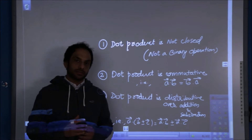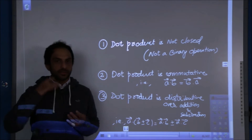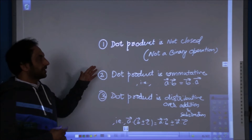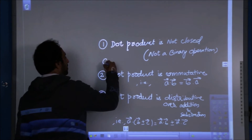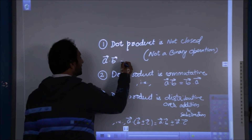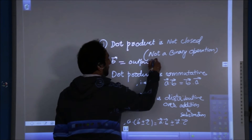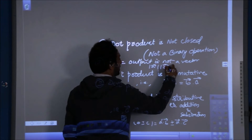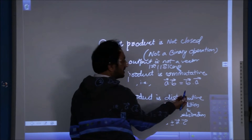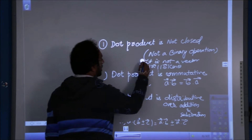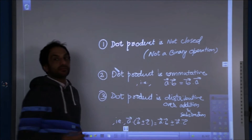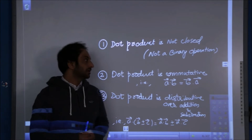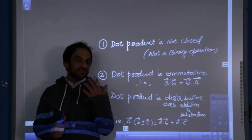Since A dot B = |A||B| cos theta, let's look at other characteristics of dot product. First, dot product is not closed — the output is not a vector. Because |A| is a magnitude, |B| is a magnitude, and cos theta is also a number, so the result is a scalar. That's why the dot product does not obey the closure law and hence it is not a binary operation.